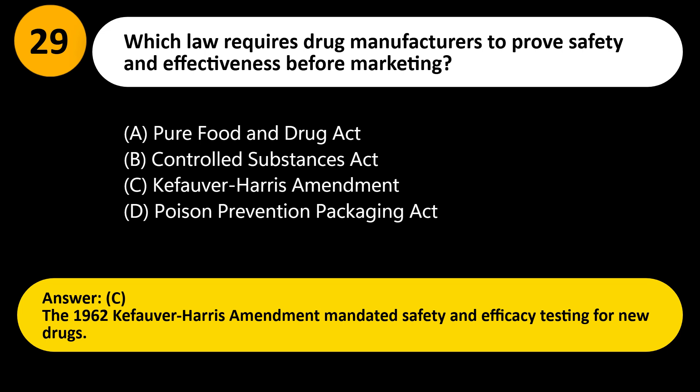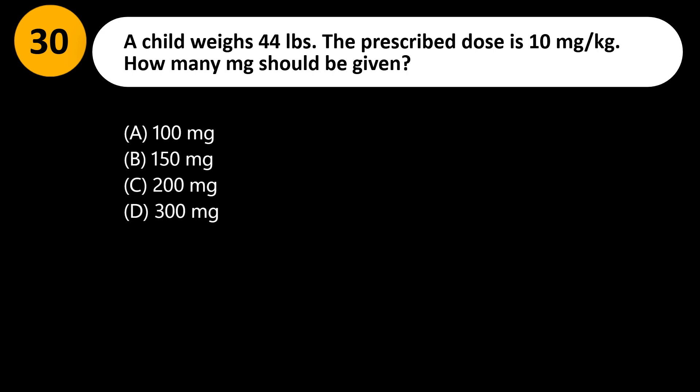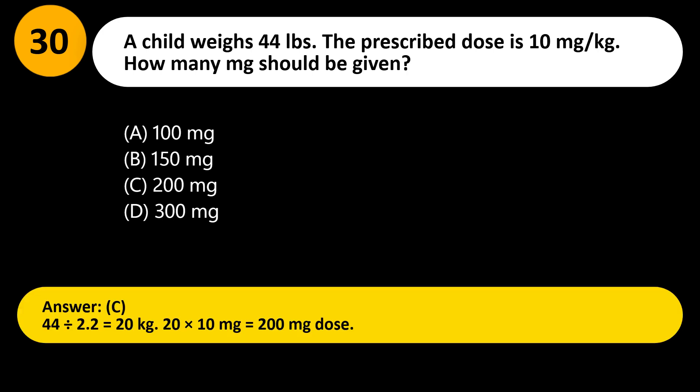A child weighs 44 pounds. The prescribed dose is 10 mg/kg. How many mg should be given? A) 100 mg, B) 150 mg, C) 200 mg, D) 300 mg. Answer: C. 44 ÷ 2.2 = 20 kg; 20 kg × 10 mg/kg = 200 mg.